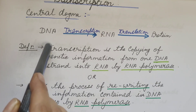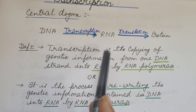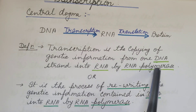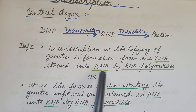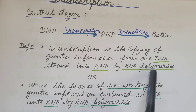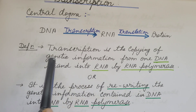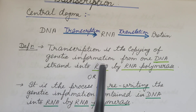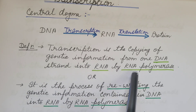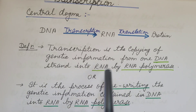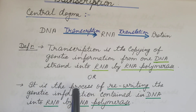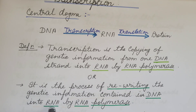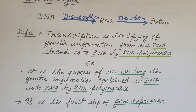Transcription is the copying of genetic information from one DNA strand into RNA by RNA polymerase. The genetic information of one DNA strand is copied into RNA, and this process is catalyzed by RNA polymerase. It is the process of rewriting the genetic information contained in DNA into RNA by RNA polymerase. It is the first step of gene expression.